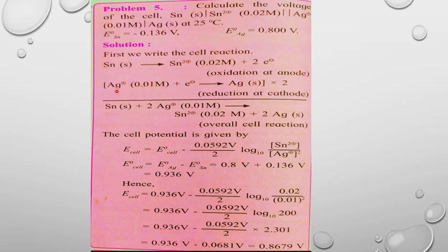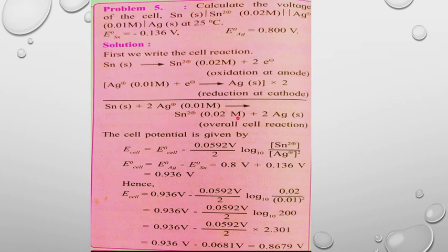At the cathode (reduction): 2Ag⁺ + 2e⁻ → 2Ag (multiplied by 2). Combining the oxidation and reduction reactions gives the overall net cell reaction: 2Ag⁺ (0.01 M) + Sn → Sn²⁺ (0.02 M) + 2Ag.